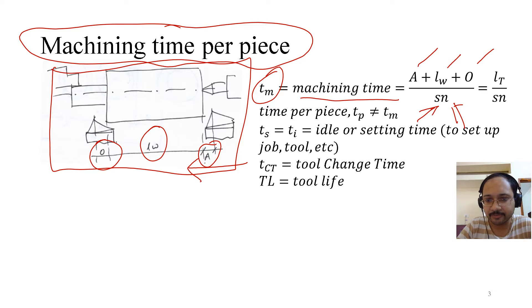So time per piece and machining time, they are not equal. That is what we have to understand. Why? What other things are there? So there's TS or TI which is the idle or the setting time, that is to set up the job as well as the tool. Then T subscript CT, that is tool change time. You may have a tool turret where constantly the tools are being replaced, the tools are changed.